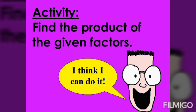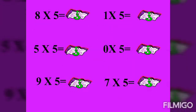FACTORS. 7 times 5 equals — you can write your answers in the paper.